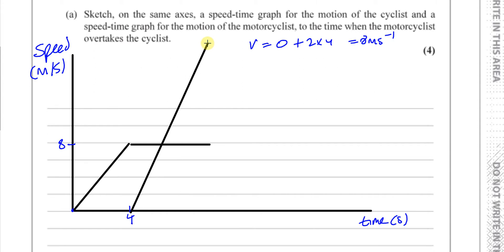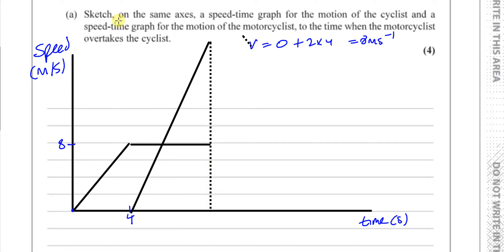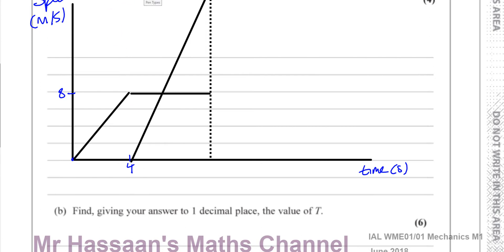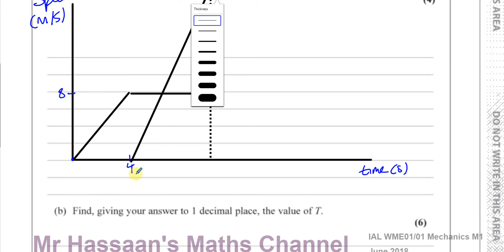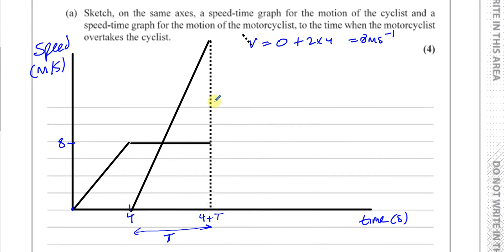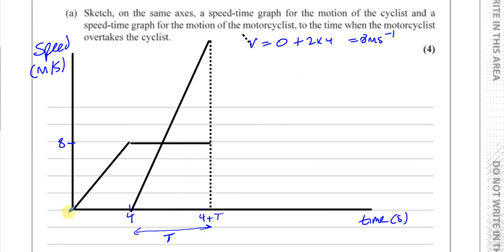The motorcyclist starts at t = 4 seconds on the graph. The capital T in the question is the time for which the motorcyclist has been moving — so the total time on the x-axis when overtaking occurs is four plus T. At that point, the motorcyclist reaches the same position as the cyclist. The sketch shows the cyclist's line becoming horizontal at t = 4, while the motorcyclist's steeper line starts from zero at t = 4 and meets the relevant position at t = 4 + T.